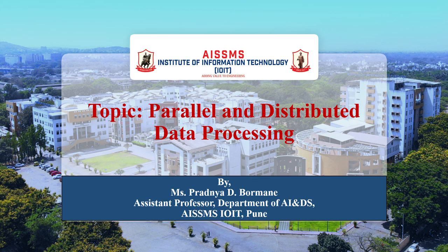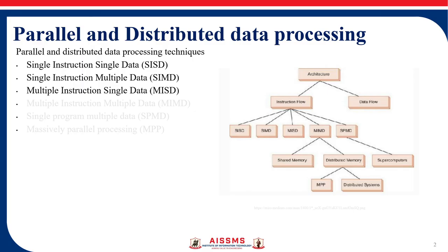So what is parallel data processing? Parallel data processing is a method of computing where many calculations or processes are carried out simultaneously. It involves dividing a program into sub-programs, or a problem into sub-problems,